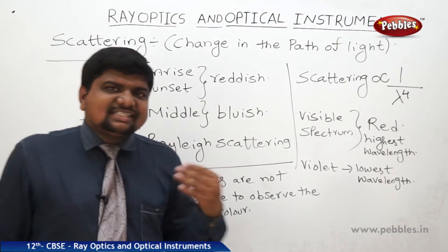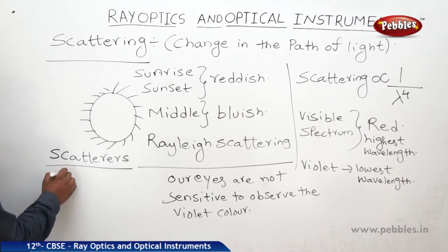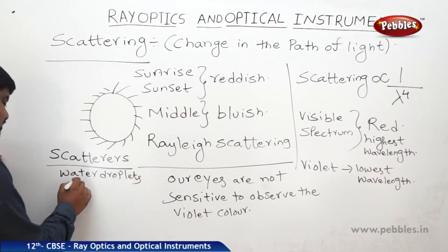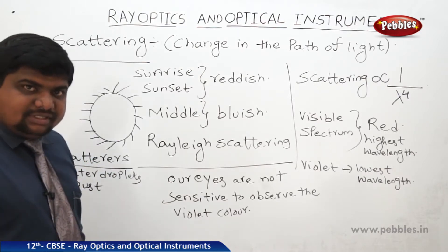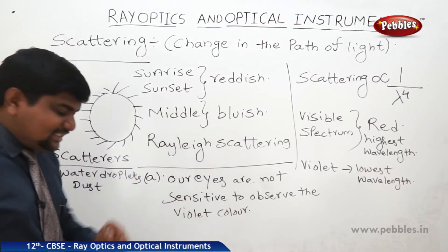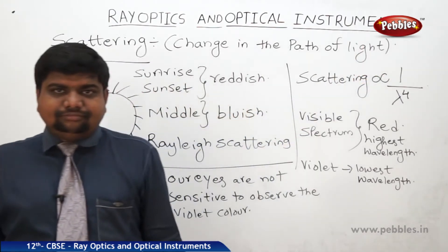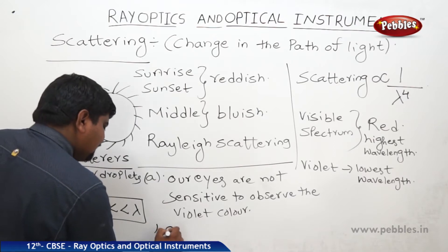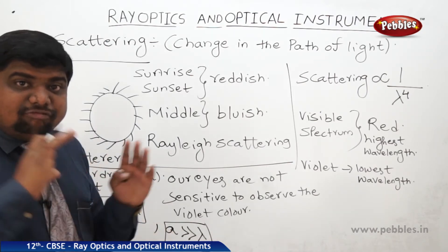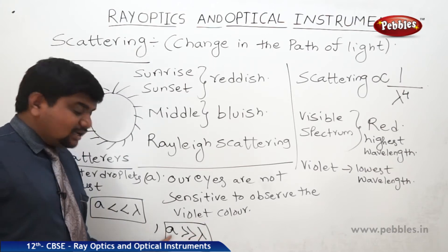There are some particles in the atmosphere responsible for scattering — these are called scatterers, which may be water droplets or dust particles. If the scatterer's size is much less than the wavelength, Rayleigh scattering occurs. But if the scatterer's size is much more than the wavelength, no scattering takes place and objects appear white. That is why clouds appear white — their size is greater than the wavelength.